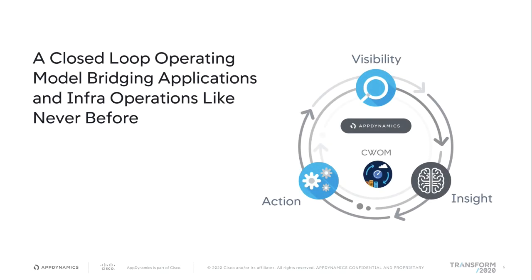What we see is a closed loop operating model bridging applications and infrastructure operations like never before. AppDynamics and CWOM are able to provide this closed loop so that from visibility to insight to action, we are able to see all of the bridges and interconnections between your application infrastructure operations. This is no longer done in a disparate way, but a really unified connected way of looking at your holistic view of applications and infrastructure.